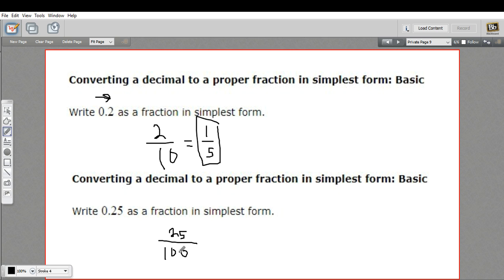And this is definitely something we can reduce. Twenty-five out of a hundred, these can both be divided by twenty-five. Twenty-five divided by twenty-five is one, of course. And one hundred divided by twenty-five is four. But you probably knew that, because twenty-five cents is a fourth of a dollar, a quarter of a dollar. So that is how to write a decimal as a fraction and put it in simplest form.